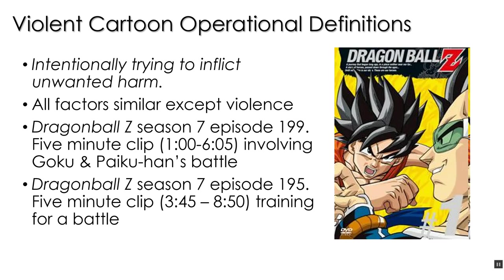In order to control conditions, all factors except for violence need to be the same across the two levels of the independent variable. What the researchers did was choose two five-minute clips of Dragon Ball Z from the same season to minimize differences between the two conditions. In one clip, there is a five-minute clip of Goku and Paikuhan's battle — that's the operational definition of violent — and then a five-minute clip of training for the battle as the non-violent condition.